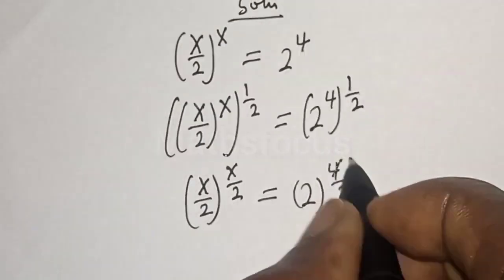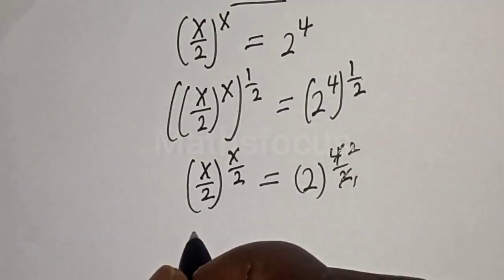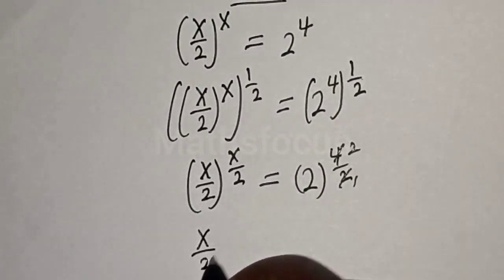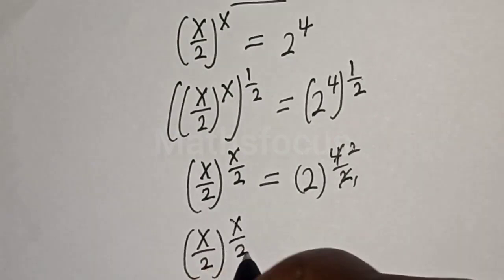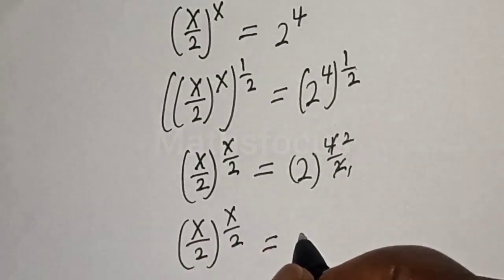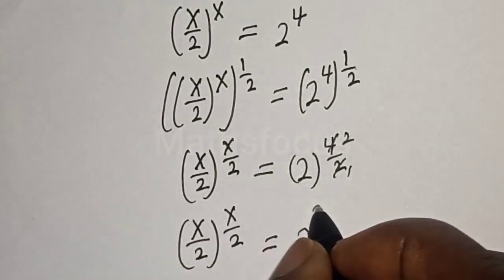2 here 1, 2 here 2. And S over 2 to the power of S over 2 equals 2 to the power of 2.